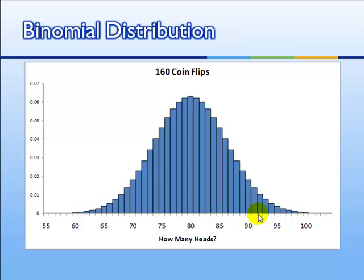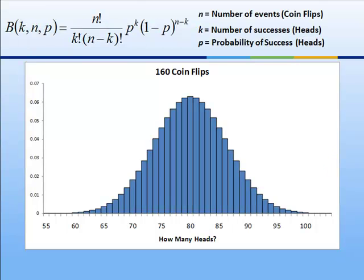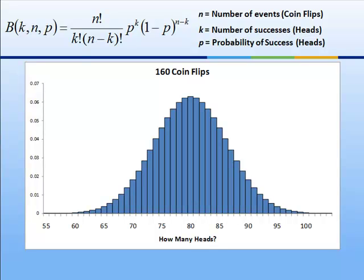Look at this distribution. It's still a binomial distribution because we're talking about coins that can be either heads or tails, but we're adding up 160 independent events, and it's starting to look like this familiar distribution. The binomial distribution has this probability mass function. I say probability mass function because discrete variables have probability mass functions, whereas continuous variables have probability density functions. This probability mass function may look a bit confusing, but it's not necessary for you to understand it to grasp the point of this lecture.